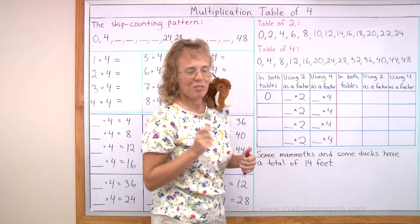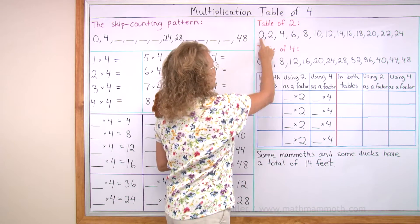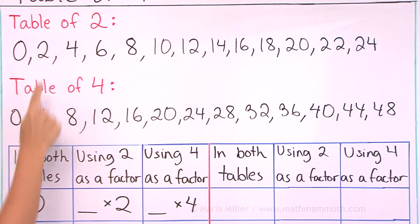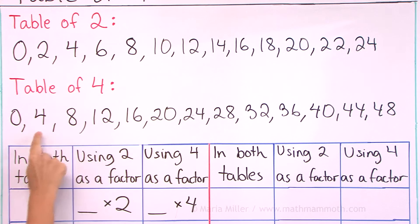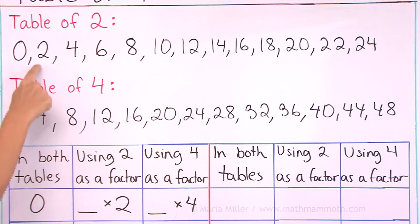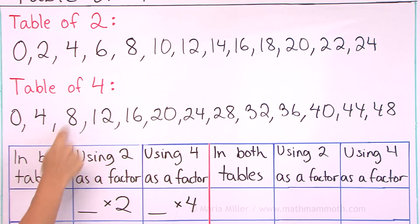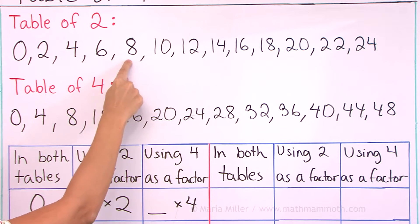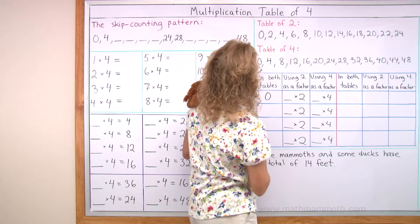Notice first of all that when we look here, we can see that these answers in this list are exactly doubles of those in the table of 2: 2 and 4, 4 and 8, 6 and 12 — each time, 8 and double 8 is here.